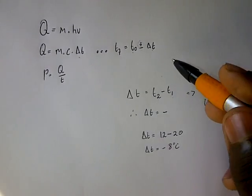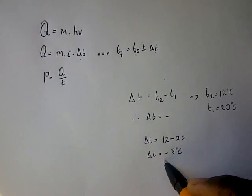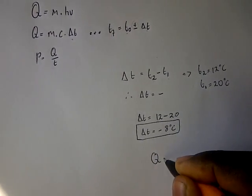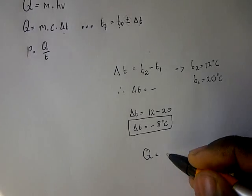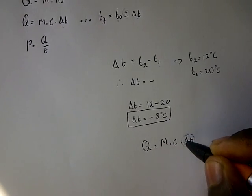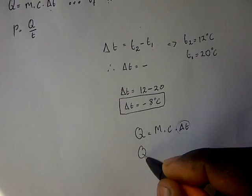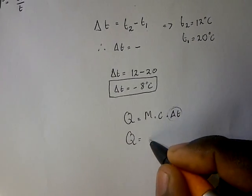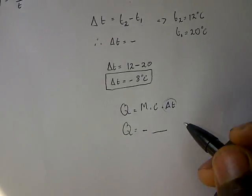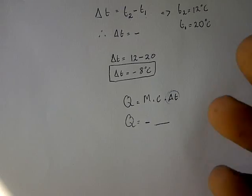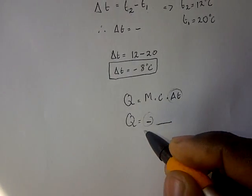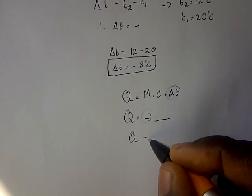For heat energy: if our change in temperature is negative, that means our heat energy — which is mass multiplied by specific heat capacity multiplied by change in temperature — will also give us a negative value. If our heat energy is negative, that means heat is being released or heat is being transferred to another element.